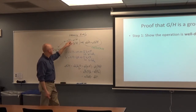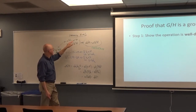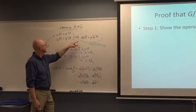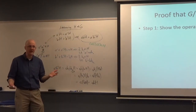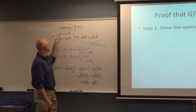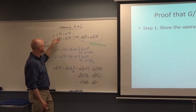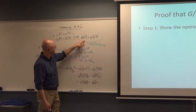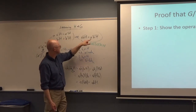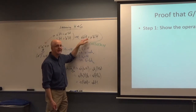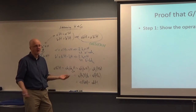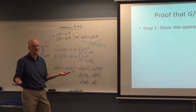So if we assume aH and a'H are the same, and assume bH and b'H are the same, then the product we get with coset multiplication — thinking of the cosets with a and b as representatives, we get one result; thinking of the cosets with a' and b' as representatives, we get another. Are these two cosets the same thing? They better be. Otherwise, the operation doesn't make sense.